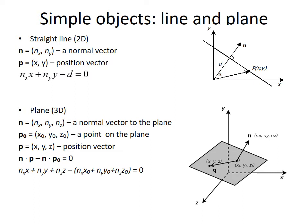Similarly, if n equals (n_x, n_y, n_z) is a normal vector to the plane, p_0 equals (x_0, y_0, z_0) is a point on the plane, and p equals (x, y, z) is a position vector for an arbitrary point,